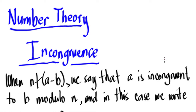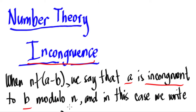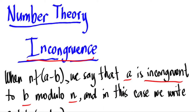We're now on our next video in number theory, still in our chapter on the theory of congruences. Here we're going to briefly discuss what we mean when we say two integers are incongruent with respect to modulo n. So when n is not divisible by the difference a minus b, we say that a is incongruent to b modulo n, and we write it with the congruence symbol crossed out.